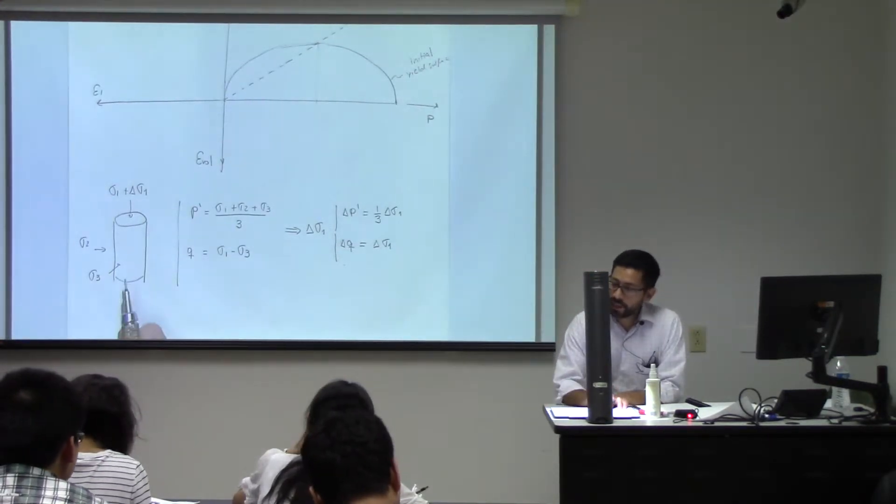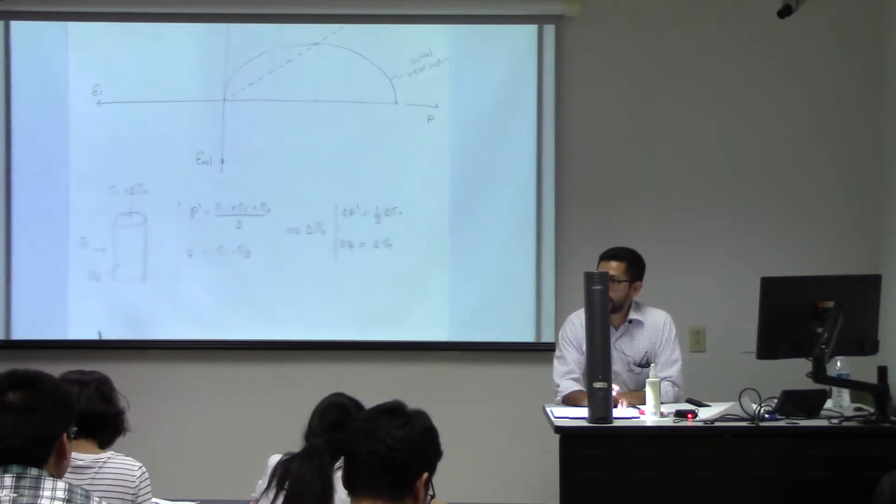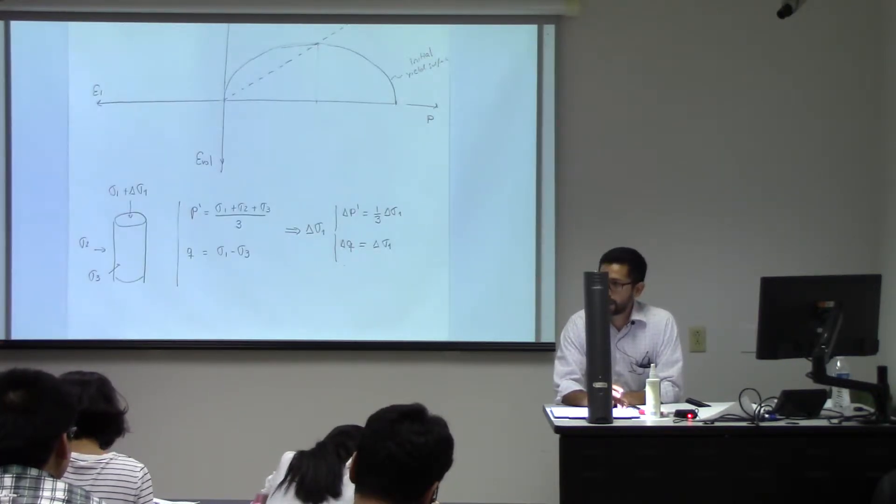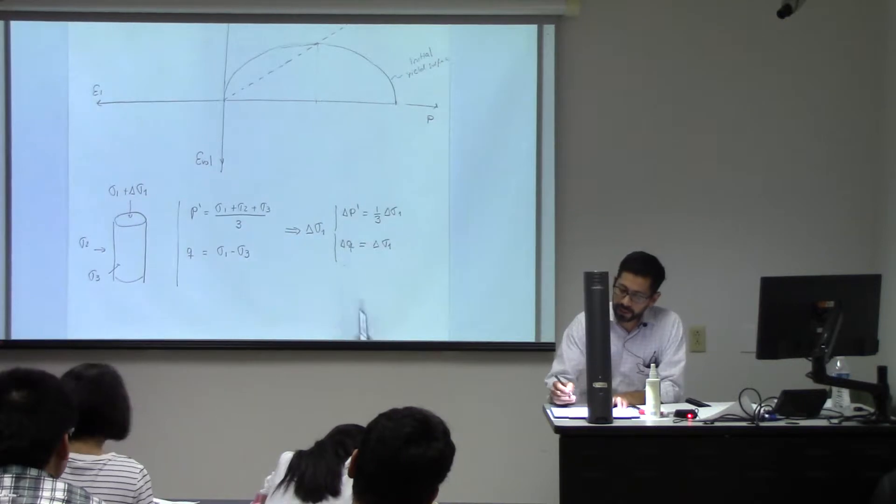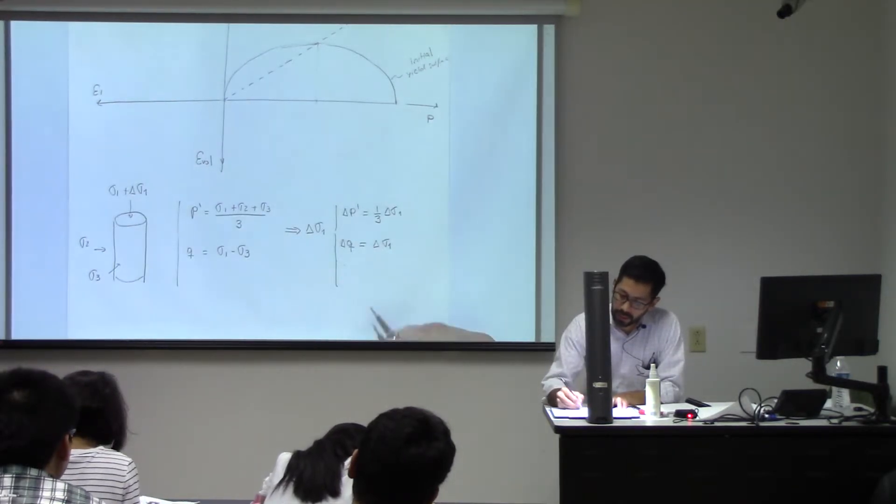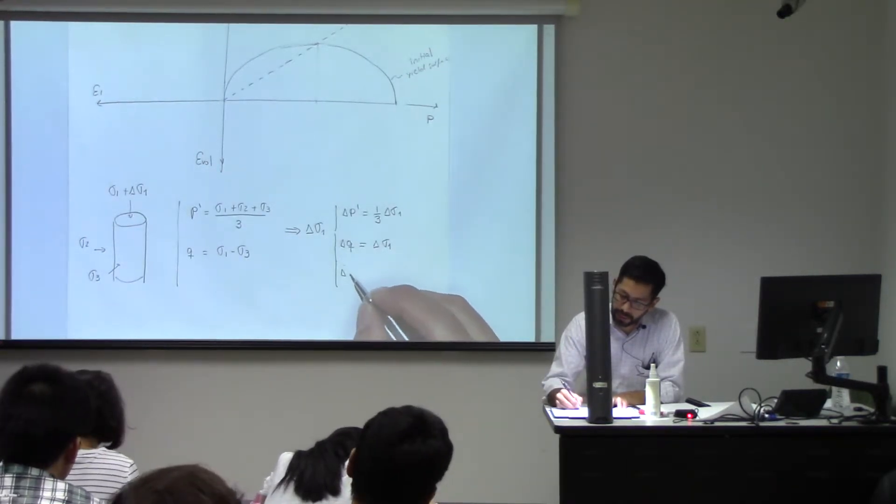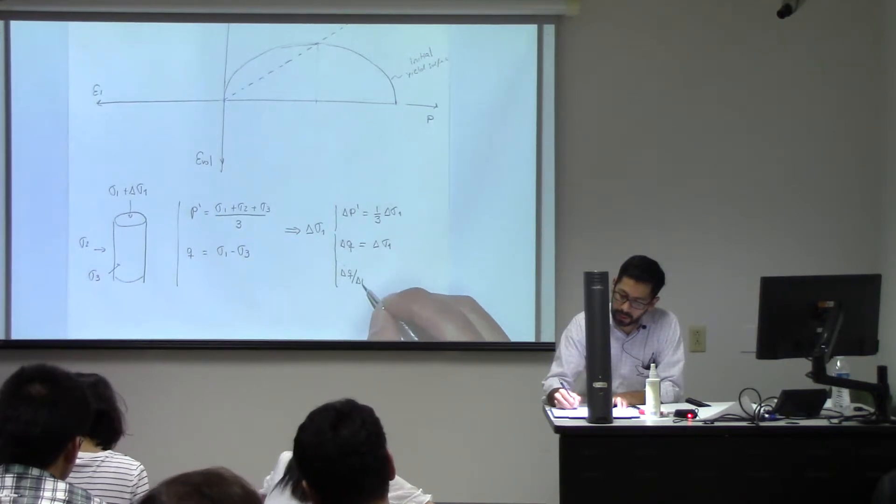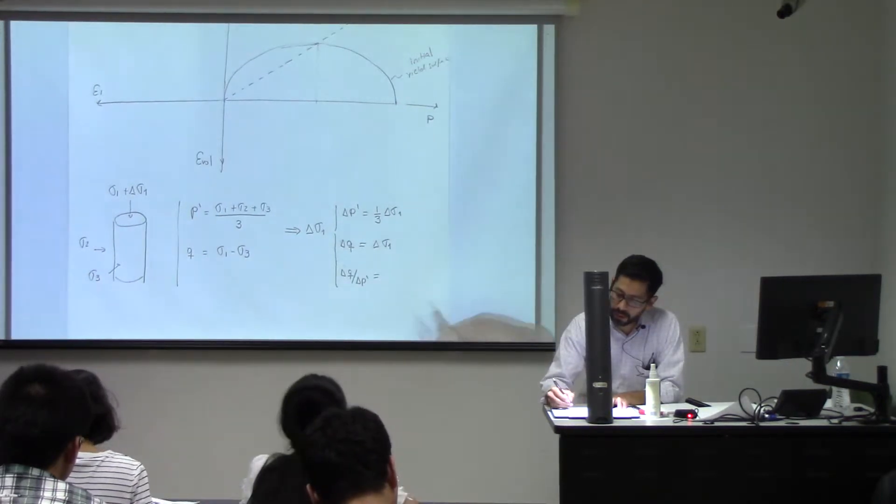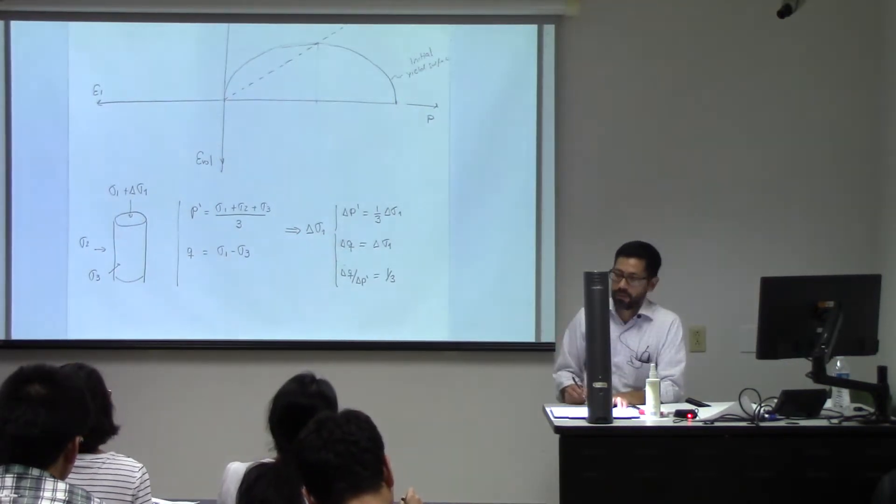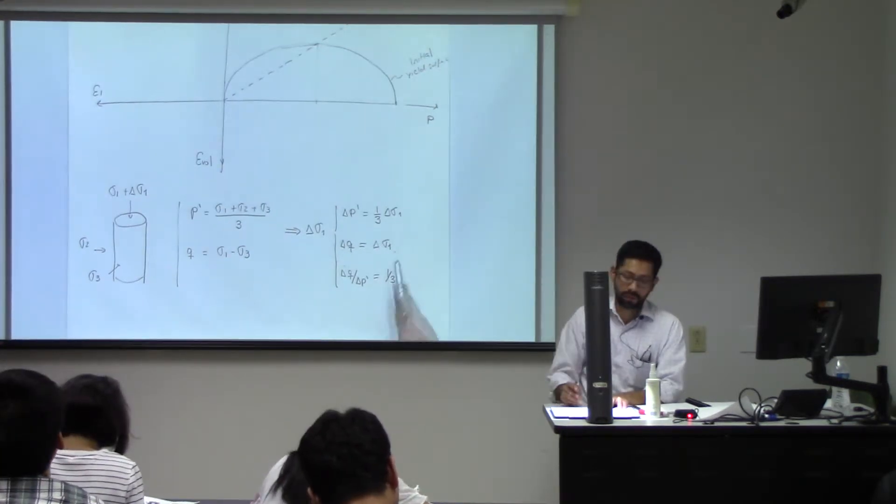And when I run a triaxial test, what I'm trying to figure out here is what is called the stress path. When I run a triaxial test, the ratio of delta Q divided by delta P prime is going to be one third, right? So this is what I get from these equations.